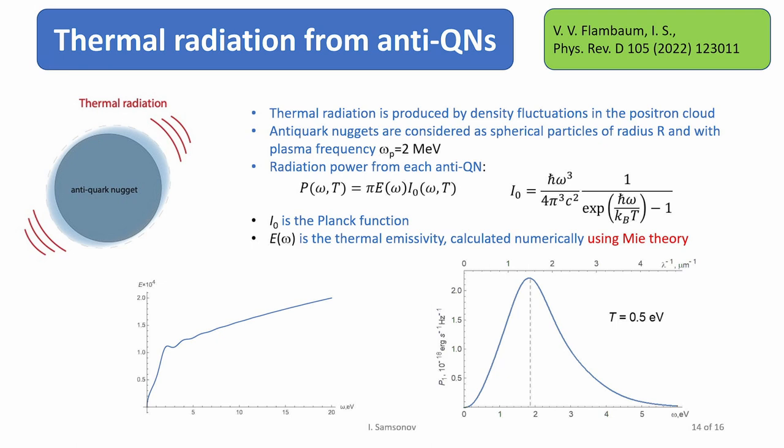This is the plot of this function for low frequency. We did plot further, but here I present it just for illustration. Given this function E, we can find the spectrum of radiation from each particular quark nugget. This is one particular example of radiation. How can we use it?